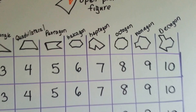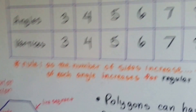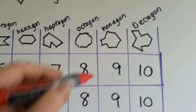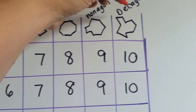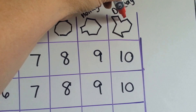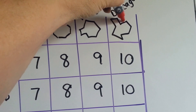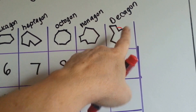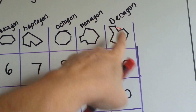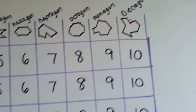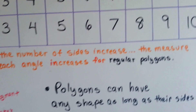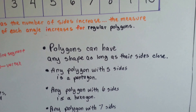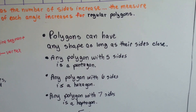You can look at these. On this one, this angle is on the outside — that's an exterior angle. It's on the outside of the shape. Polygons can have any shape as long as their sides are closed.